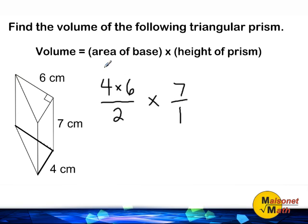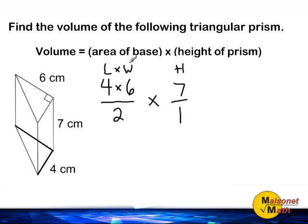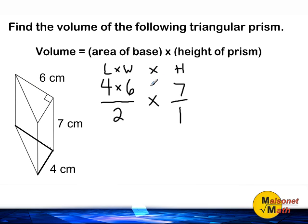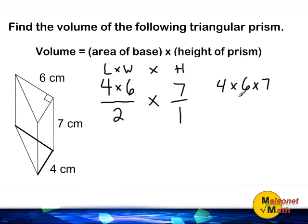Another way of saying base times height of a triangle could be length times width, and we can still call the height of the prism the height. So we basically have length times width times height. When you multiply length times width times height, that is the formula to find the volume of a rectangular prism. So what we have is 4 times 6 times 7 for our numerator — the same as finding the volume of a rectangular prism — but because we divide it by 2, that tells us how many cubic units it takes to fill a triangular prism.